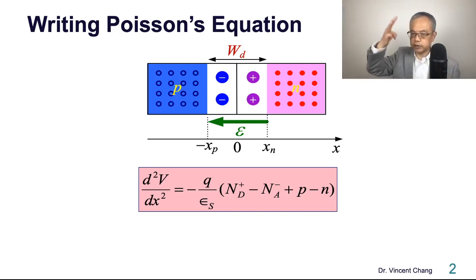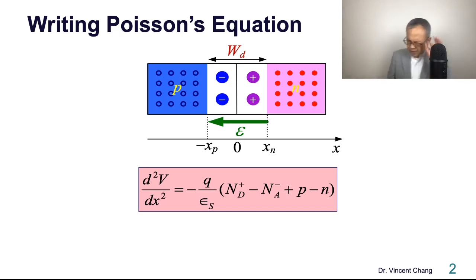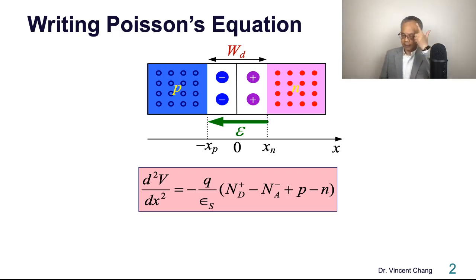There are four types of charge concentration present in a semiconductor: positive donor ion concentration, negative acceptor ion concentration, positive hole carrier concentration, and negative conduction electron carrier concentration. So: positive, negative, positive, negative.